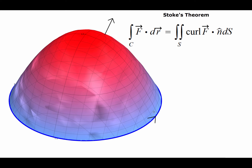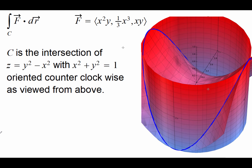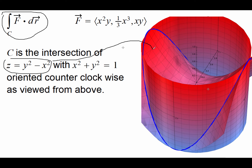Let's go ahead with the details of mathematical calculations in a particular example. We will use Stokes' theorem to compute this line integral, where the vector function is given by this definition, and C is the intersection of the hyperboloid — as you can see here — with this cylinder, whose graph is visible right here. The intersection of the two surfaces is this curve.